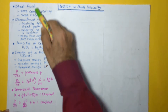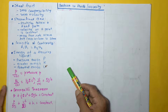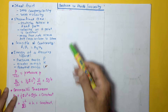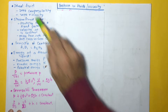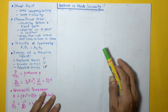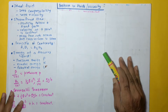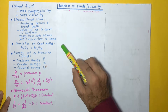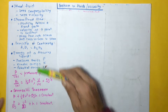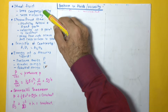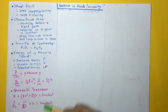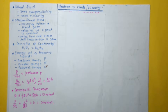We will begin with the ideal fluid. When we deal with motion in fluids we are looking at ideal fluids. Ideal fluids are fluids which are incompressible and have no viscosity, meaning there is no friction between the layers of liquid. So the assumption is that liquids are incompressible and non-viscous.